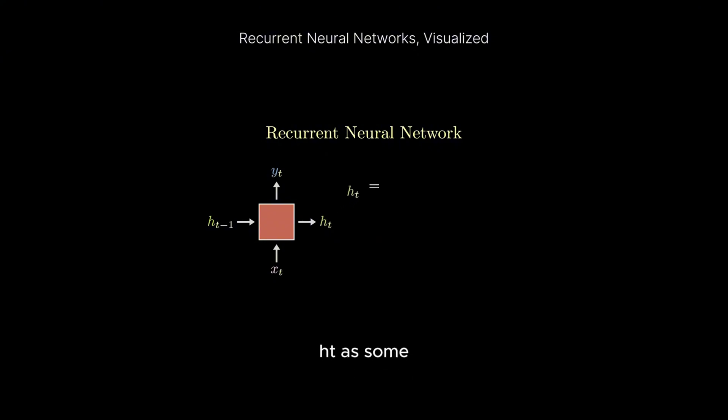We can compute h as some transformation to h, plus some transformation to x, plus some bias term, which is all passed through some nonlinear activation function. The idea here is I'm just combining all the features from the current input and the previous hidden state to get the next hidden state.